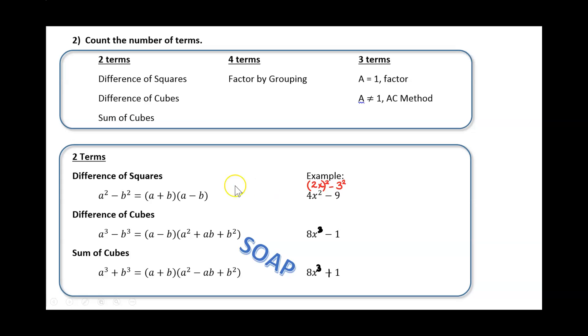We could rewrite the 4x squared to be 2x squared, and we could rewrite the 9 to be 3 squared. Alright, so if we take our first term 2x plus our second term 3, and then our first term 2x minus our second term 3, that's how we would factor that down to a difference of squares. So 2x plus 3, 2x minus 3.